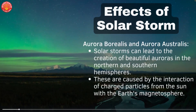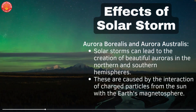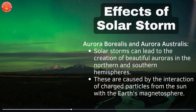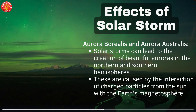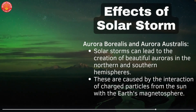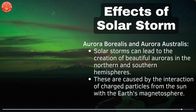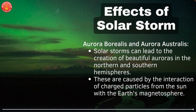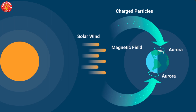Let us understand what effects we see as a result of solar storms. The very first and most important effect is aurora, also known as polar light. The light observed on the northern pole is called aurora borealis, and on the southern pole it is called aurora australis. This is created as a result of charged particles from the solar storm interacting with Earth's magnetic field, generating light observed at both poles.